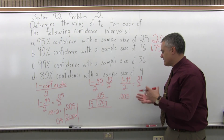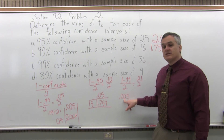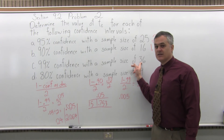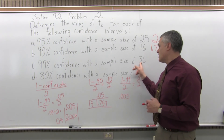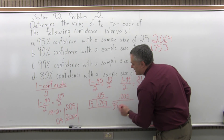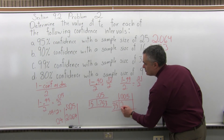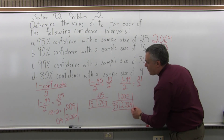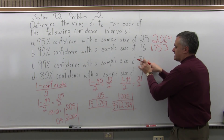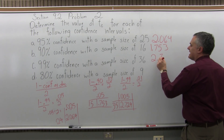You can do that work on a calculator if you like. The 0.005 is the column you want to look in. For the row: if we have a sample size of 36, we would have one less for the degrees of freedom, which is 35. Where that 35 degrees of freedom row intersects with the 0.005 column gives 2.724. So for a 99% confidence interval with a sample size of 36, T sub C equals 2.724.